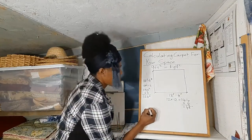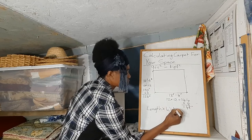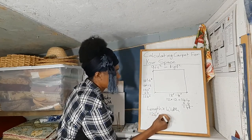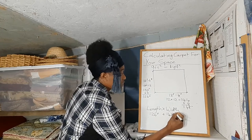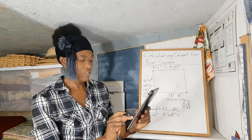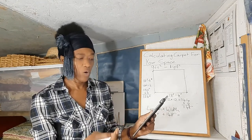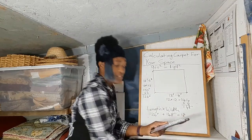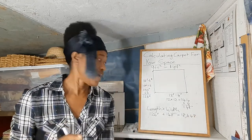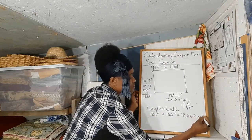Next, we multiply length times width. So we multiply 126 inches by 148 inches. Using the calculator: 126 times 148 equals 18,648. That's 18,648 square inches.